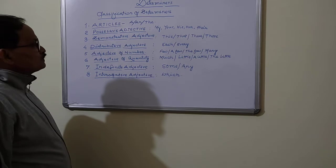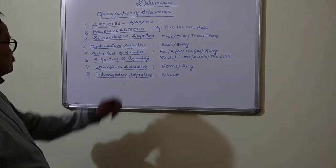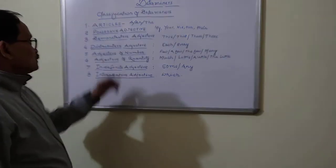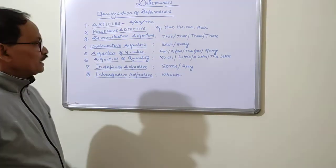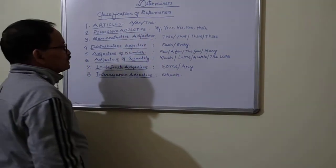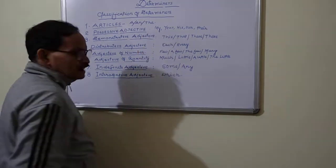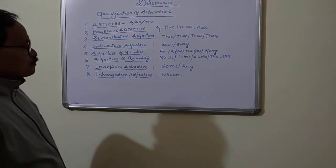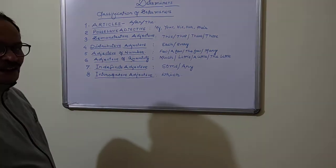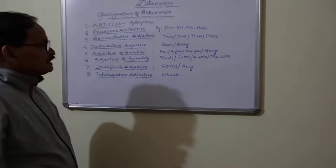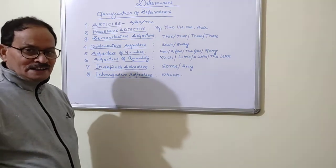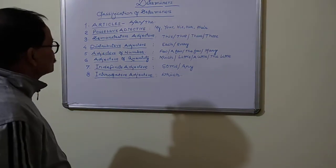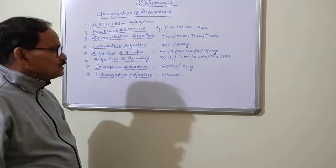As per classification, Determiners have been classified into eight parts. Number one is Articles, which are A, AN, and THE — in which A and AN are indefinite articles and THE is a definite article. For example, if I say 'he is a boy,' then 'boy' is the noun here and 'A' is the indefinite article. It indicates that the boy is not properly known to us; rather, he is a general boy. So indefinite article A has been used before it and it is in the form of a Determiner.